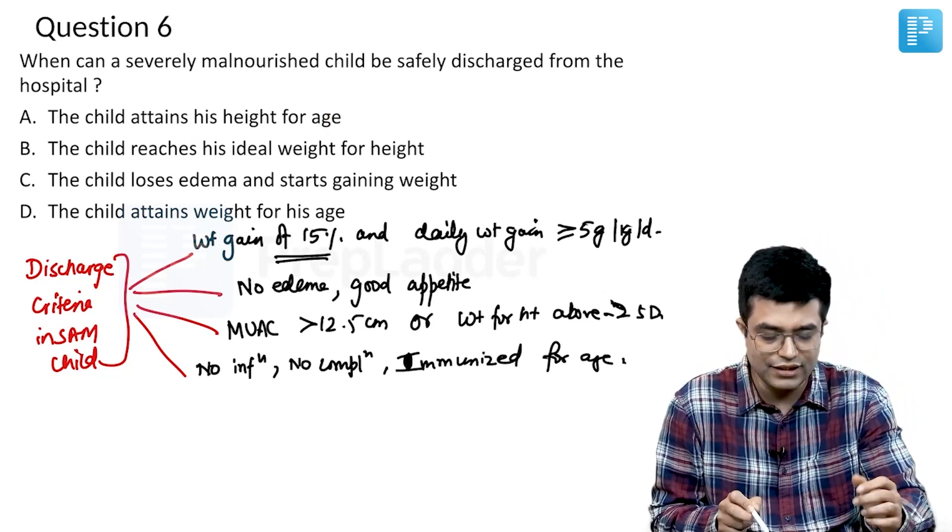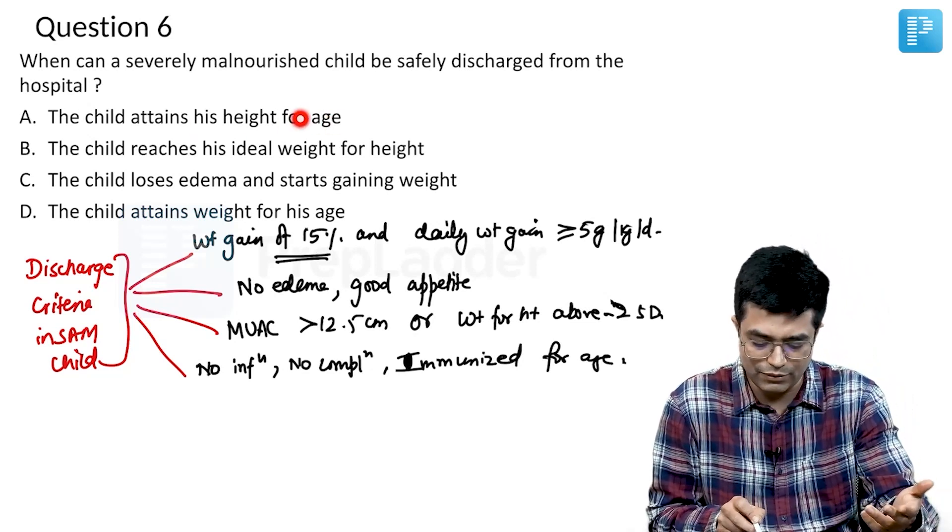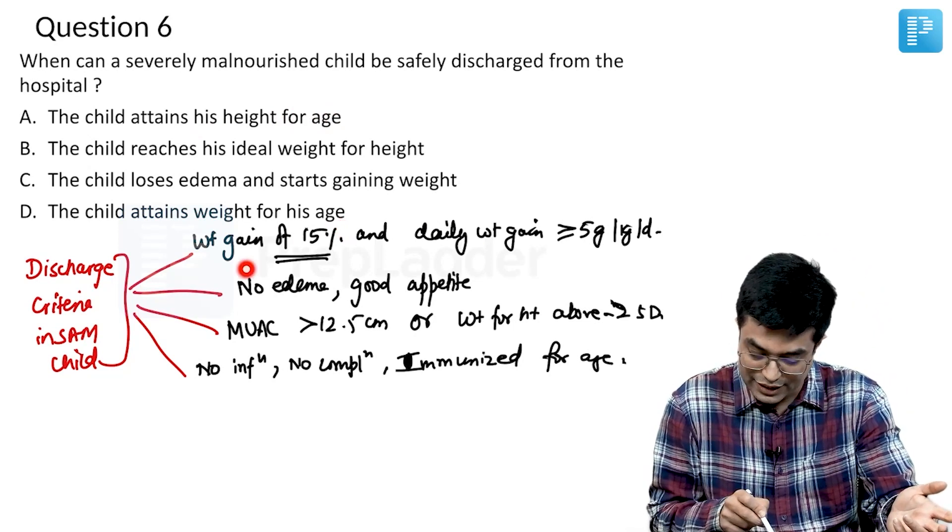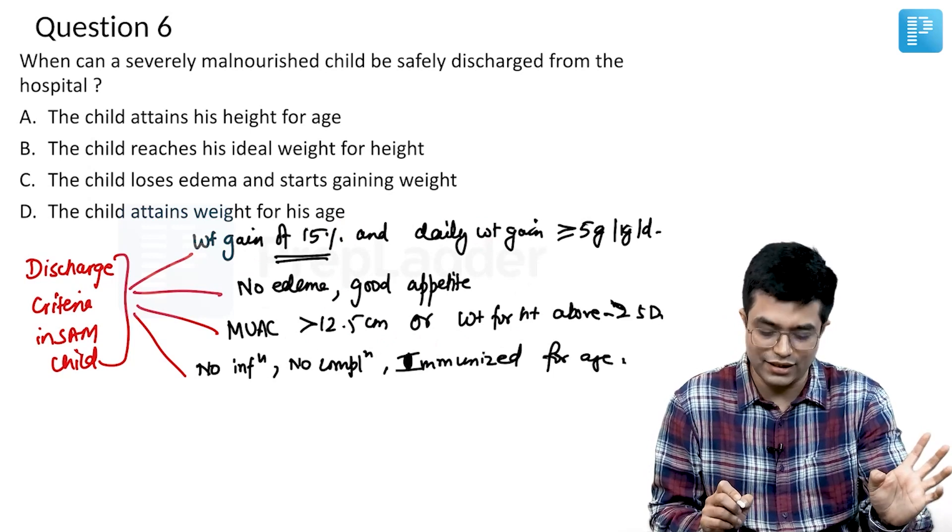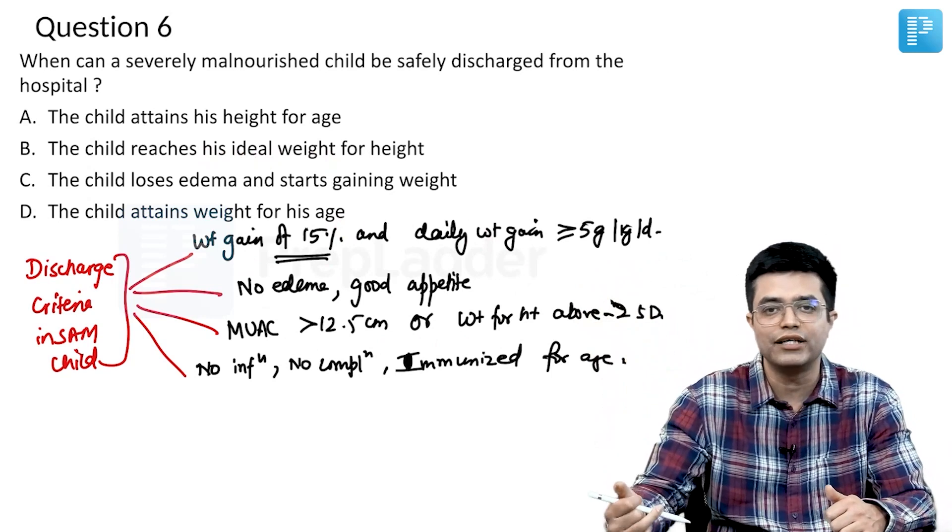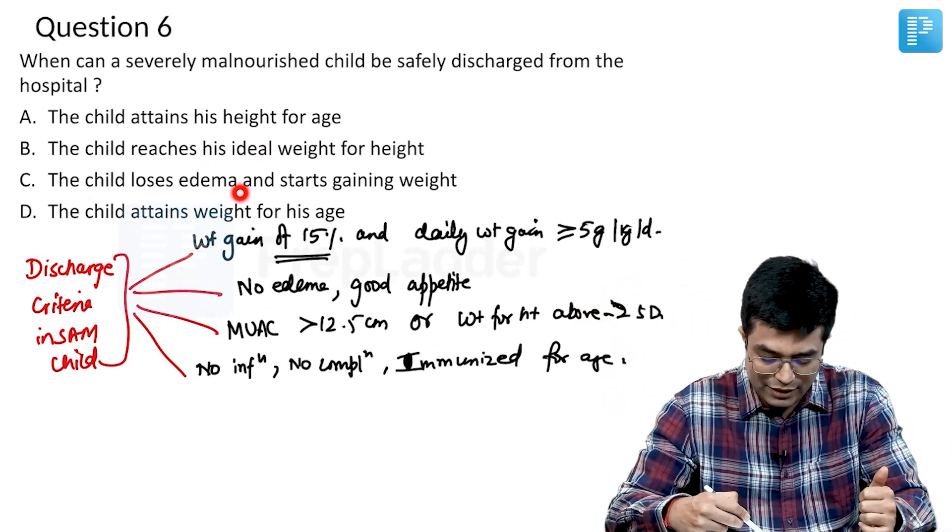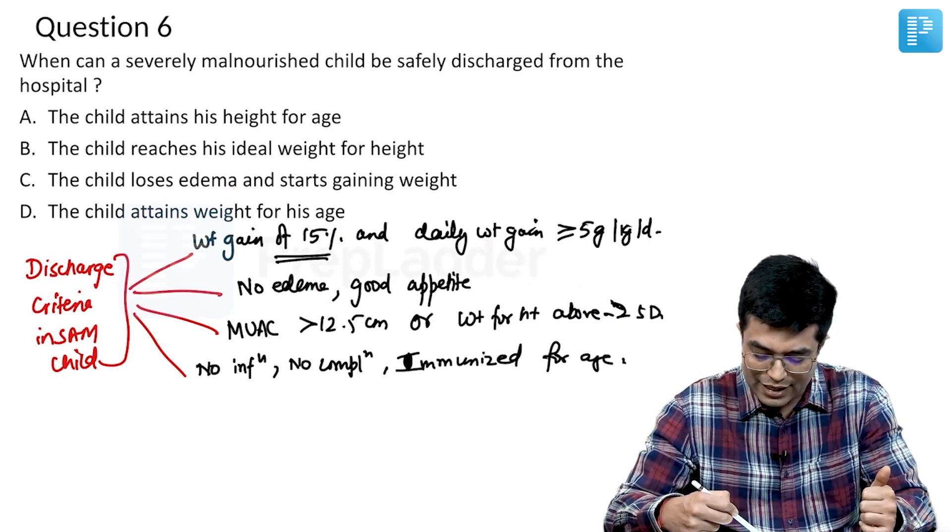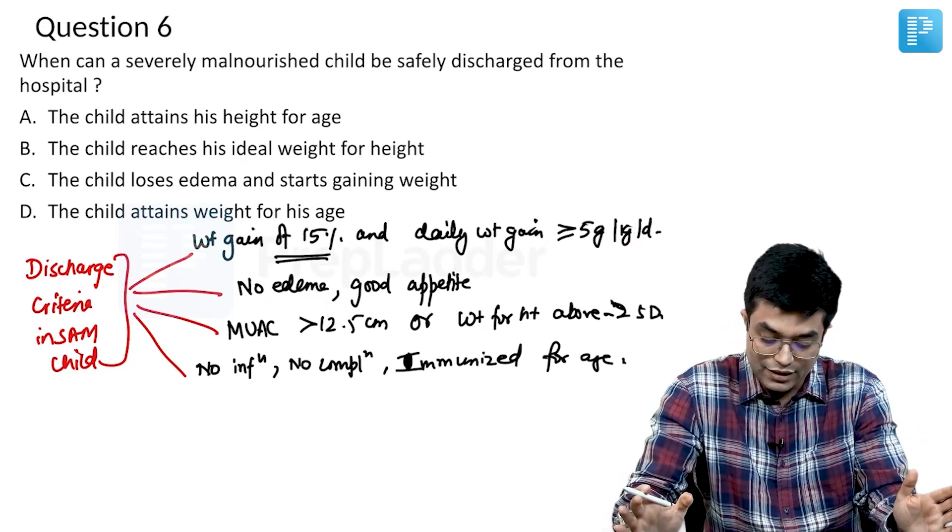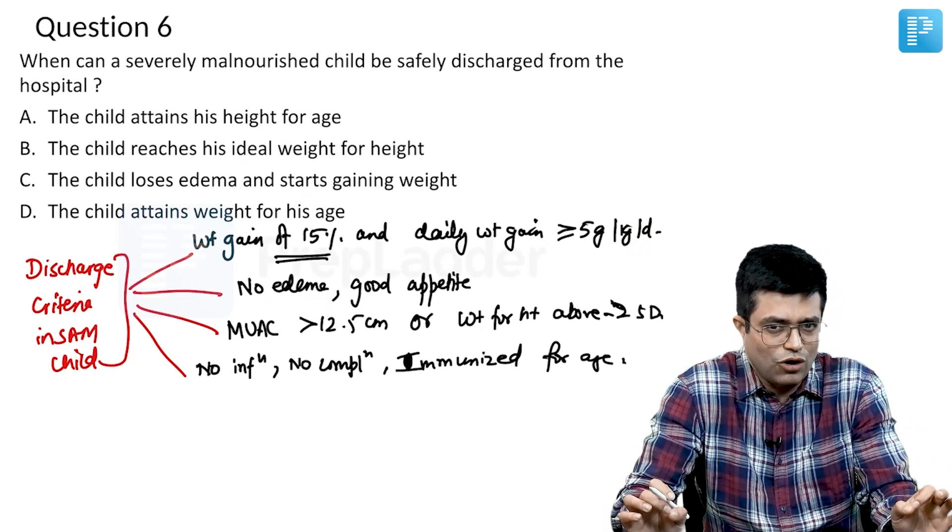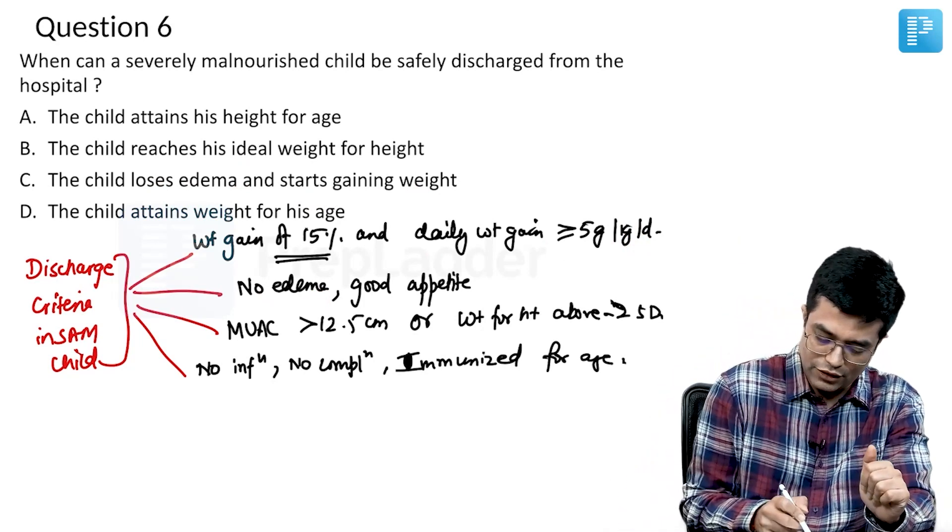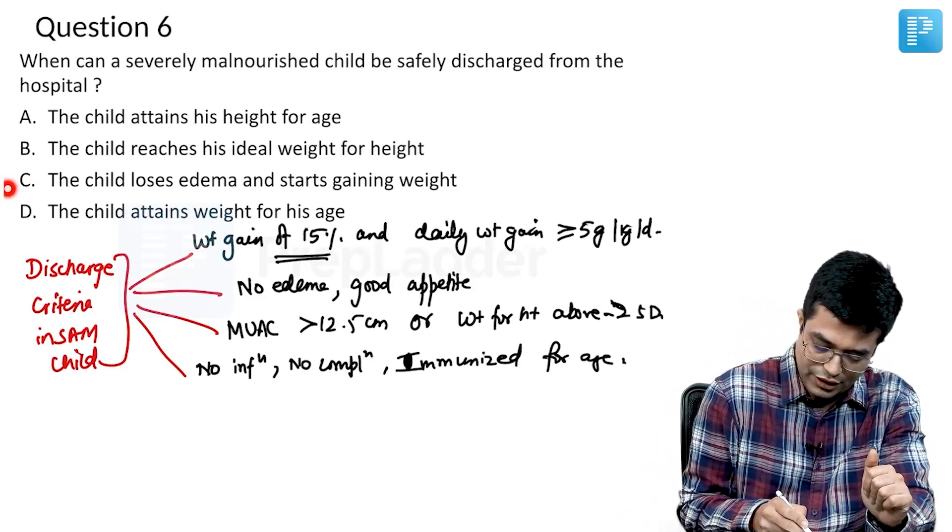Option A, height for age is not a criteria, so that will be ruled out. Child attains his weight for age. Weight for age again is not exactly a criteria. Child reaches ideal. Ideal is not needed, it should just be above minus 2 standard deviation. Loses edema, yes, there should be no edema and starts gaining weight, daily weight gain 5 grams per kg per day. All the 4 options if you look at, they are not perfect options. But the best answer among these options given is option number C and that is your correct answer.